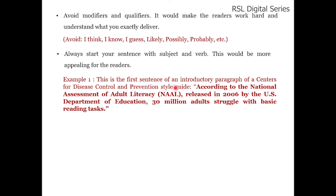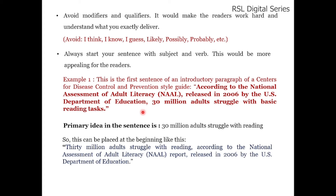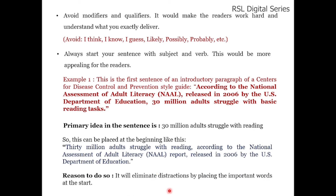For example, a sentence from a Centers for Disease Control and Prevention style guide reads: 'According to the National Assessment of Adult Literacy, released in 2006 by the U.S. Department of Education, 30 million adults struggle with the basic reading task.' The main idea is '30 million adults struggle with the basic reading task,' so we can place this at the start: '30 million adults struggle with reading, according to the National Assessment of Adult Literacy report released in 2006 by the U.S. Department of Education.' This eliminates distraction for the reader.